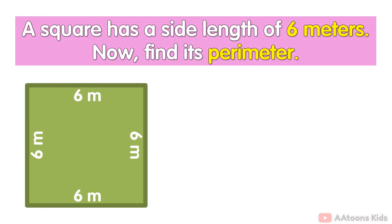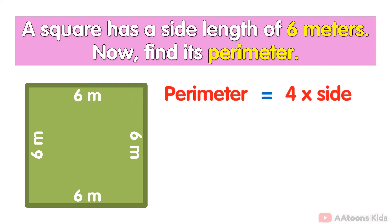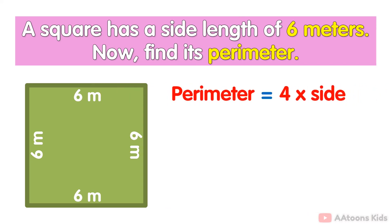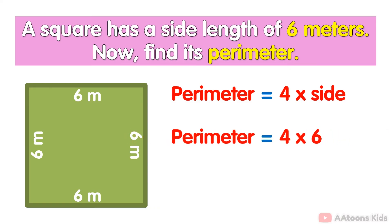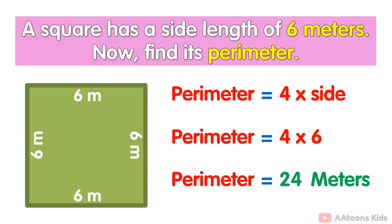Example: a square has a side length of 6 meters, find its perimeter. Perimeter of a square equals 4 multiplied by its side length. Put the value 6 in the formula. After multiplying, the result is 24. So the perimeter of the square is 24 meters.